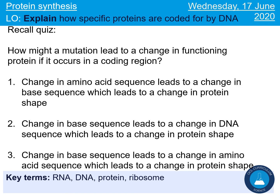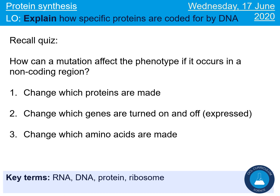Next question — pause the video and choose your correct answer. We should have chosen number three. Remember, if we change a base sequence, we will change the amino acid sequence, therefore change the protein shape. Think about the enzyme — if its active site shape changes, it's not going to fit with the substrate and it will be non-functioning. Next question — we should have said number two. Remember that even though some bits of DNA are non-coding and don't code for a protein, they can still do an important job, which is deciding which genes get switched on and switched off, like the nerve cell example switching off the gene for insulin.